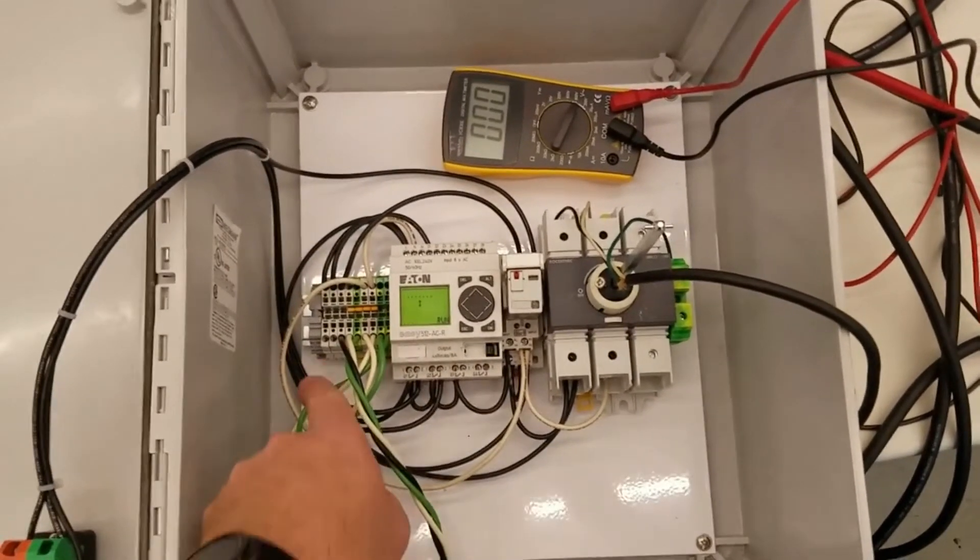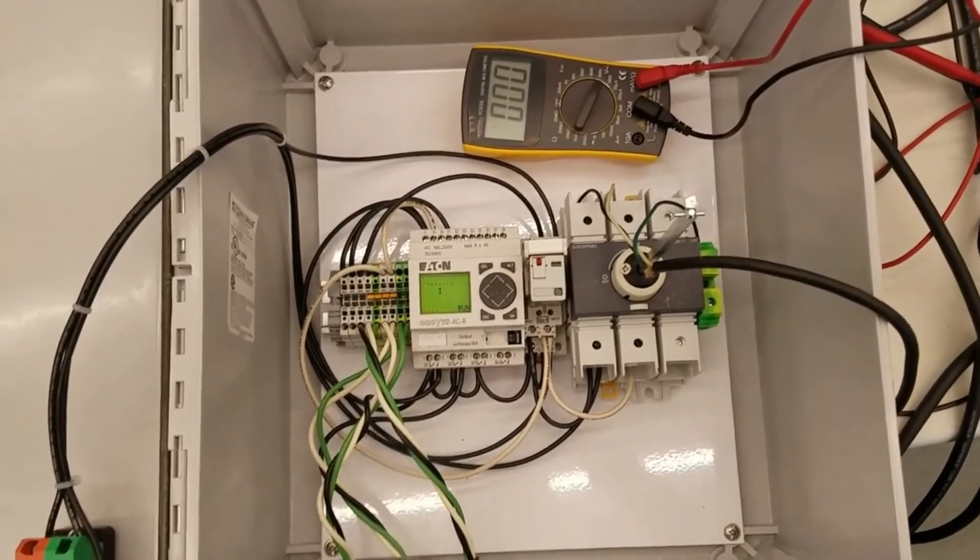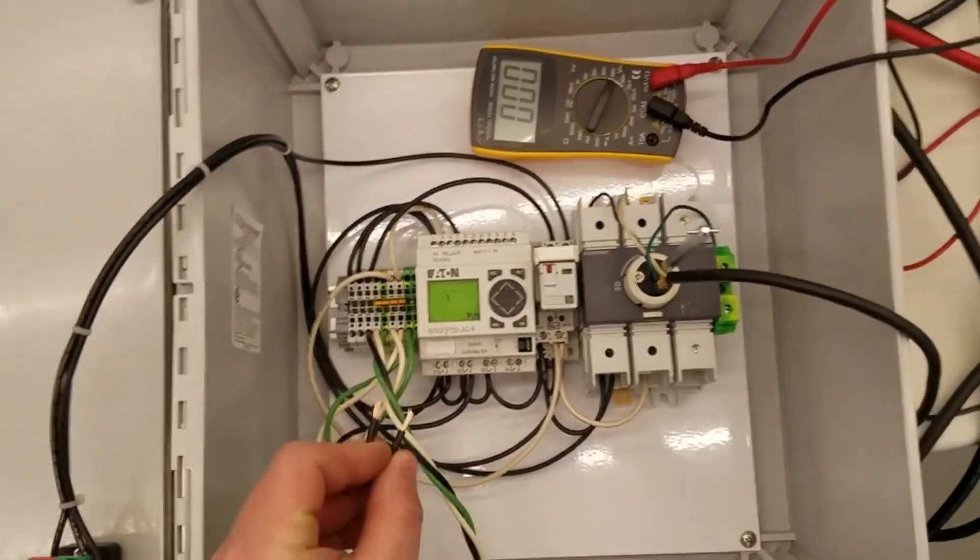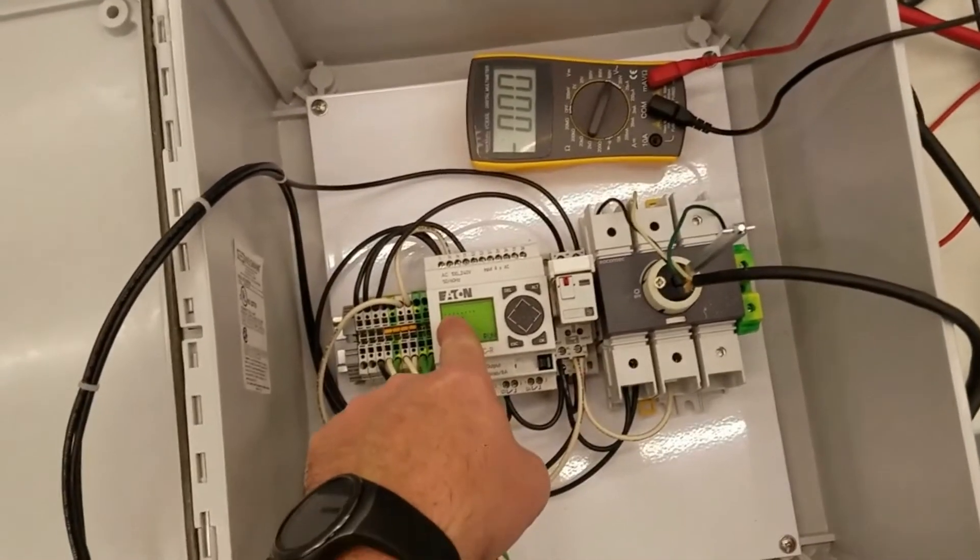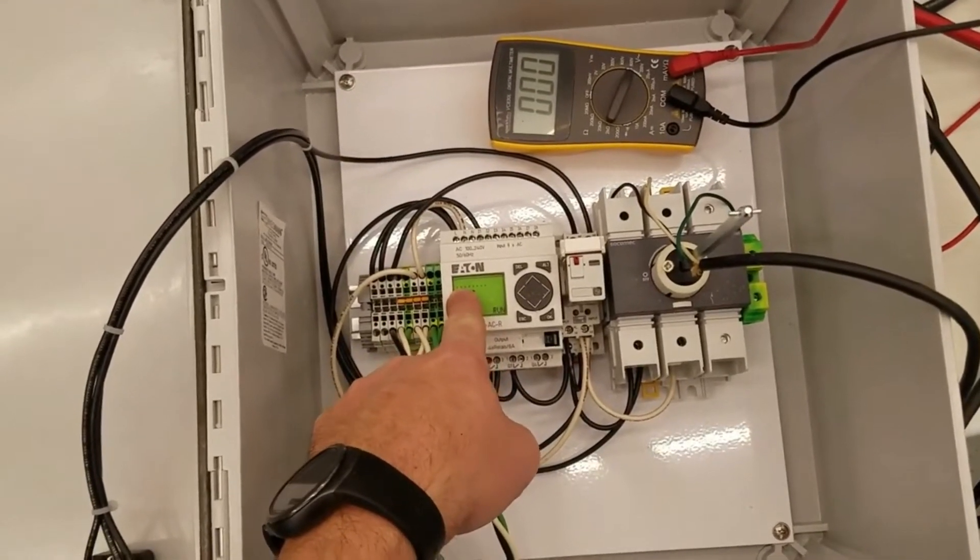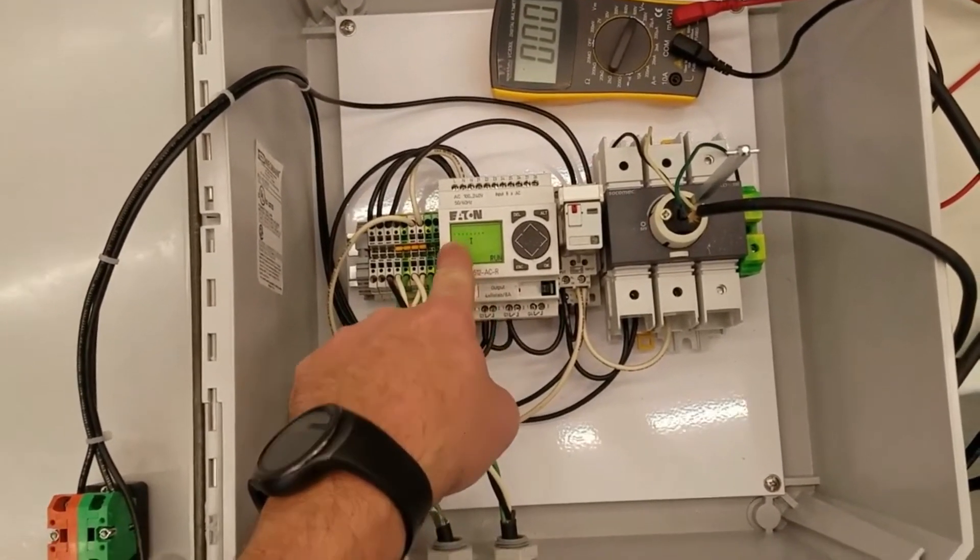Then the first two terminals over here are where you'll want to connect a dry contact to signal the PLC. Now when I connect the jumper across here, you'll see the number one light up here and that's how you'll know you're getting a signal from your external source.